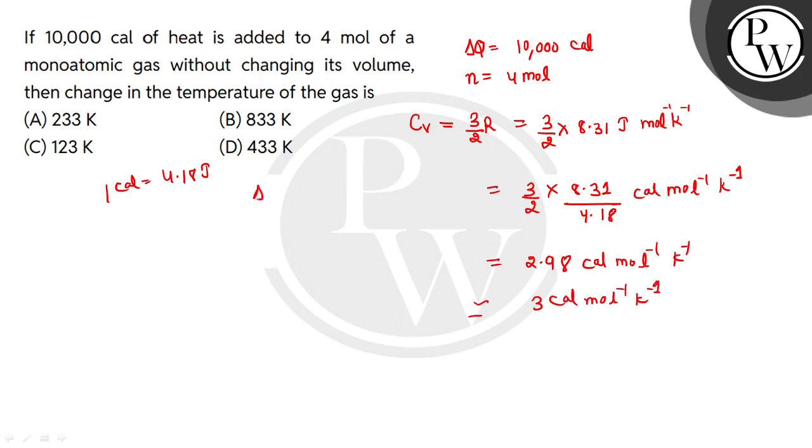To find change in temperature, delta Q equals n Cv delta T. Rearranging for delta T, that equals delta Q divided by n Cv. So that's 3 calories per mol per kelvin.